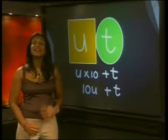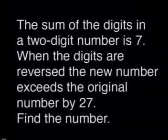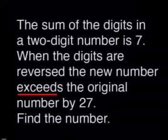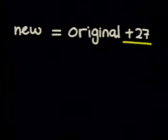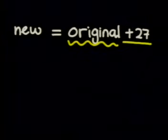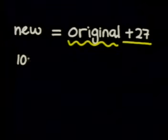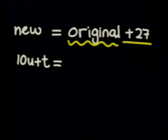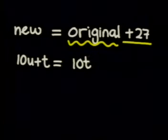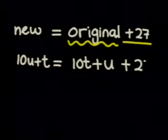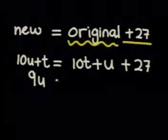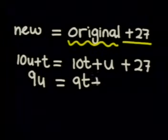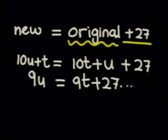Let's continue reading so that we can see the relationship between the numbers. When the digits are reversed, the new number exceeds the original number by 27. Remember that exceeds simply means that it is more than. To show the idea of more than, we simply need to add 27 to the original number. So we can write 10U plus T equals 10T plus U plus 27. This simplifies to 9U equals 9T plus 27. We can call this equation 2.